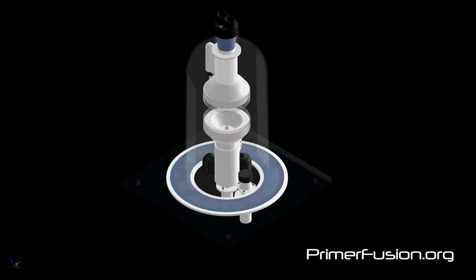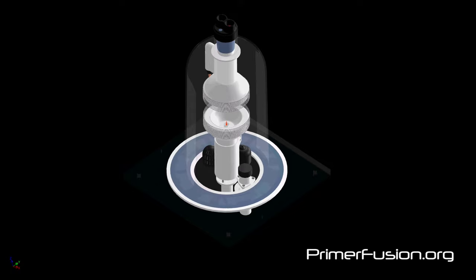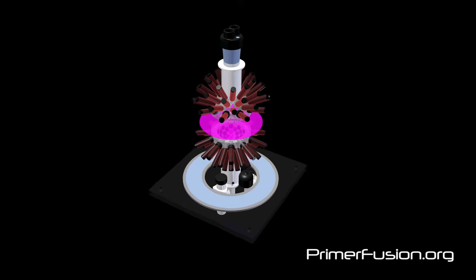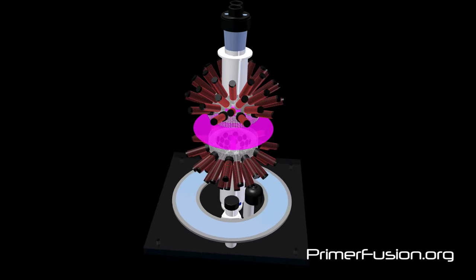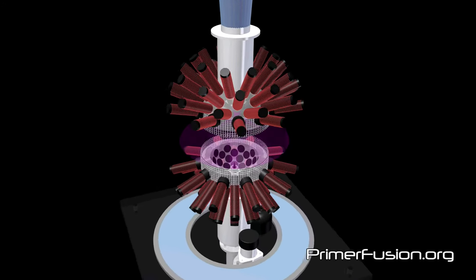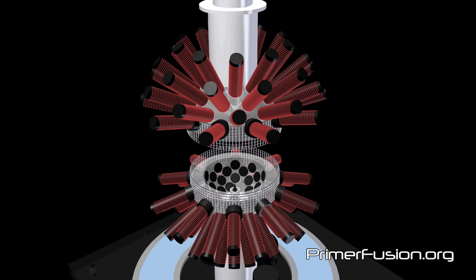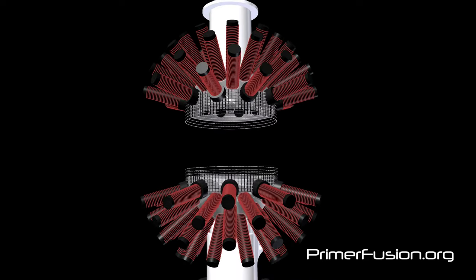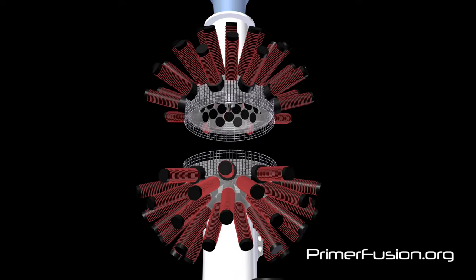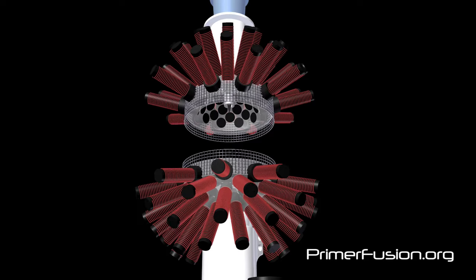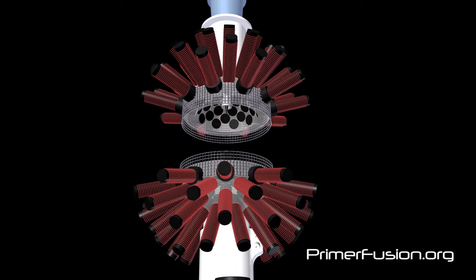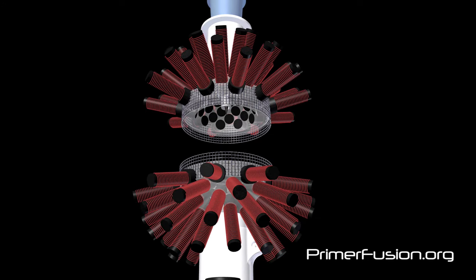One other possible improvement in the Primerfusion reactor would be replacing the neodymium magnets with electromagnets. One advantage to using electromagnets is the ability to turn the electromagnets off and on in any desired pattern and sequence. But I do not believe that electromagnets are necessary, as my past fusion experiments indicate that sufficient magnetic flux density is obtainable with high strength neodymium magnets.